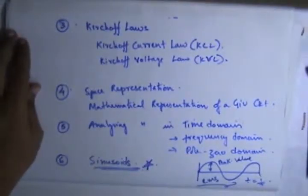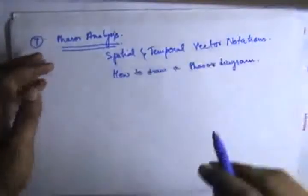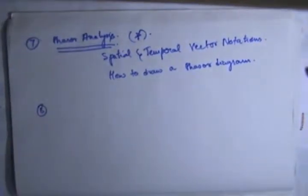The seventh video is going to be phasor analysis. Phasor analysis of a particular circuit or network is discussed in the seventh video. We are going to concentrate on how to draw a circuit in a phasor diagram representation, spatial and temporal vector relations, and how to draw the phasor diagram of a particular circuit.